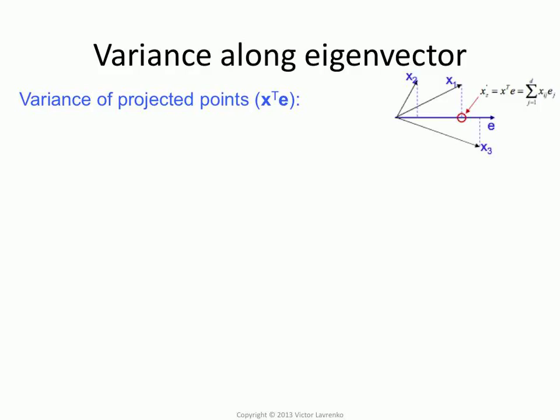So now we know why we're picking eigenvectors, because they're good, but we can actually do better. We can actually quantify what the variance along the eigenvector is going to be. And again, it's not terribly difficult, so we're just going to do it.